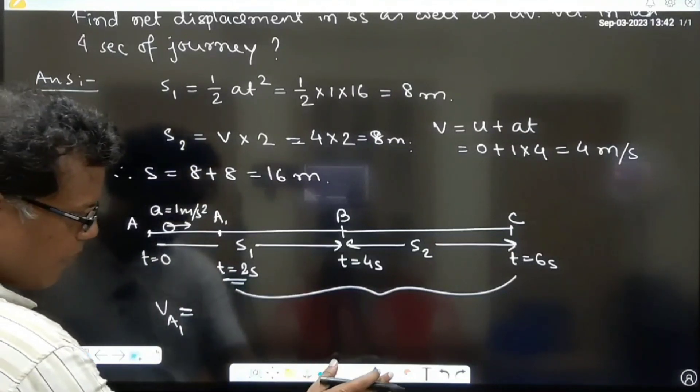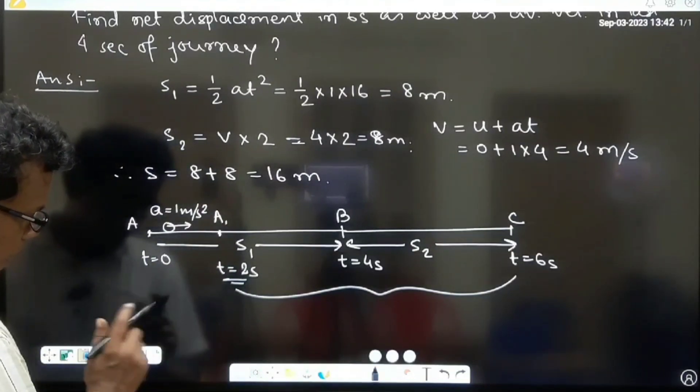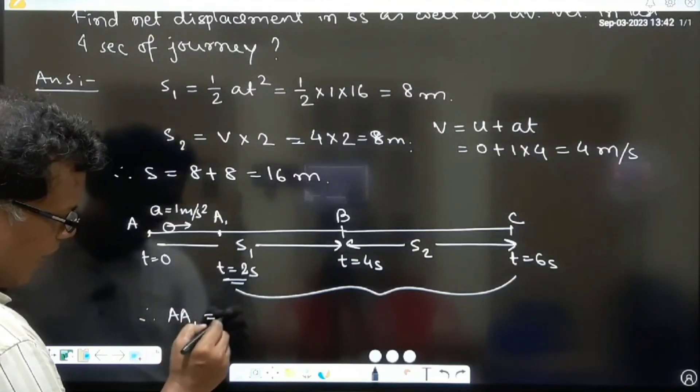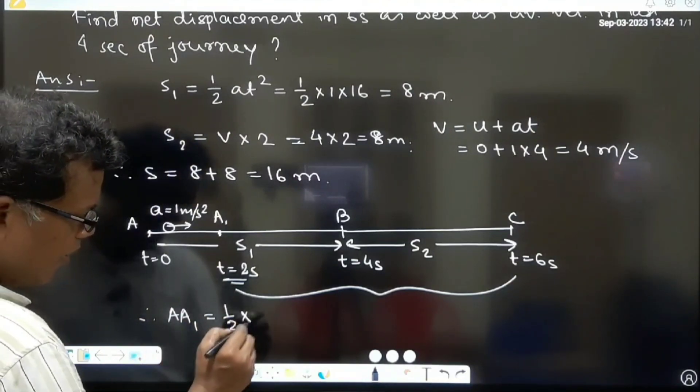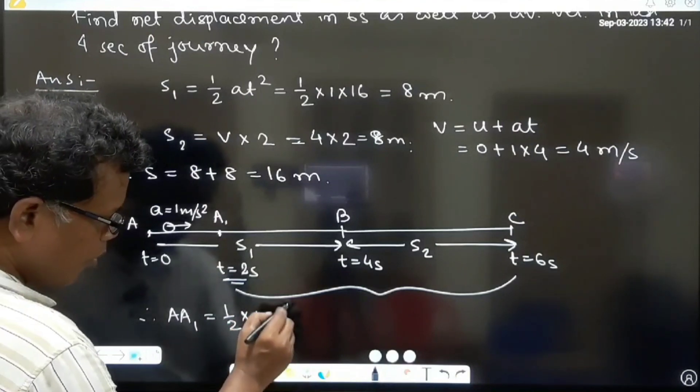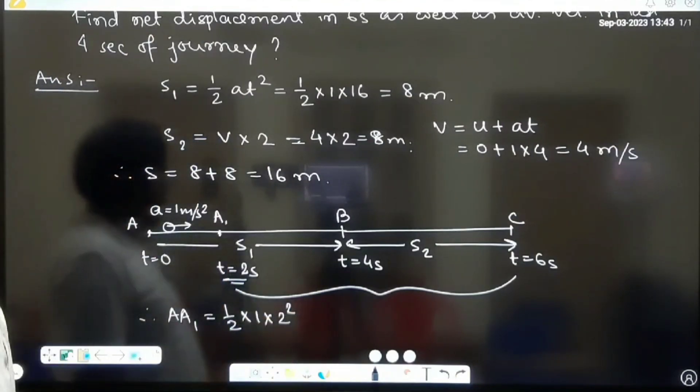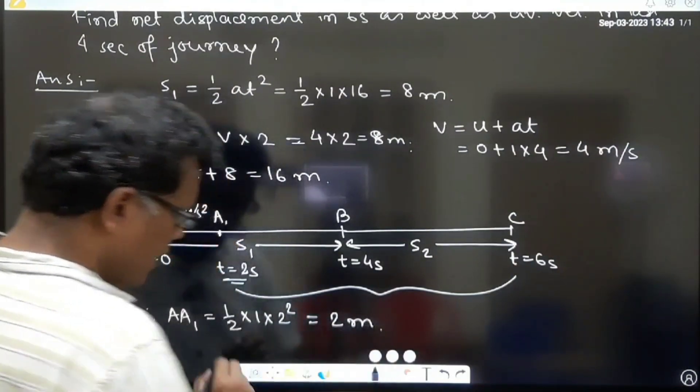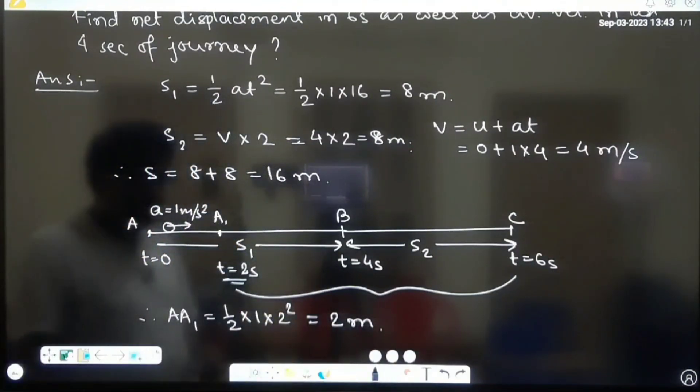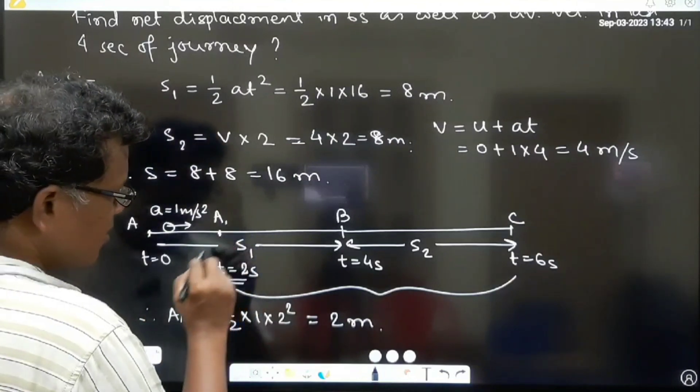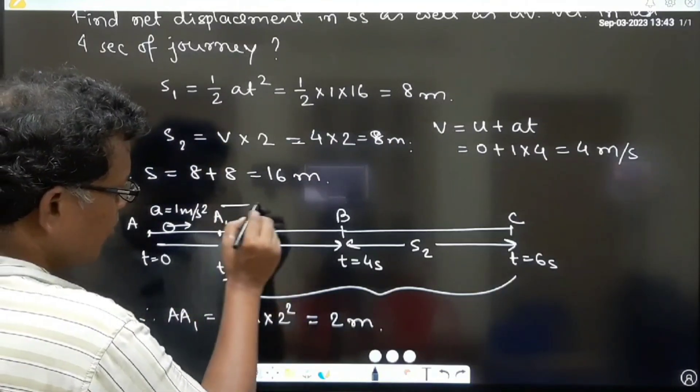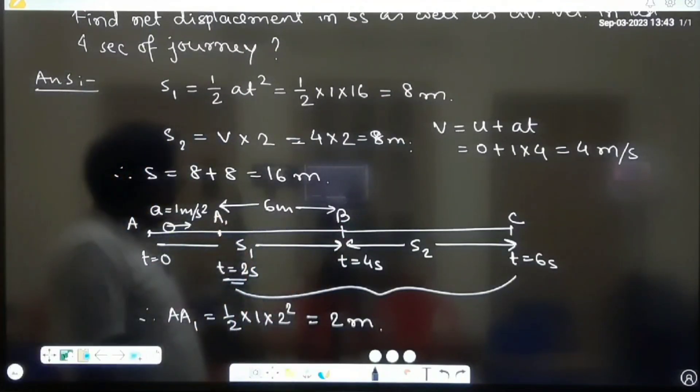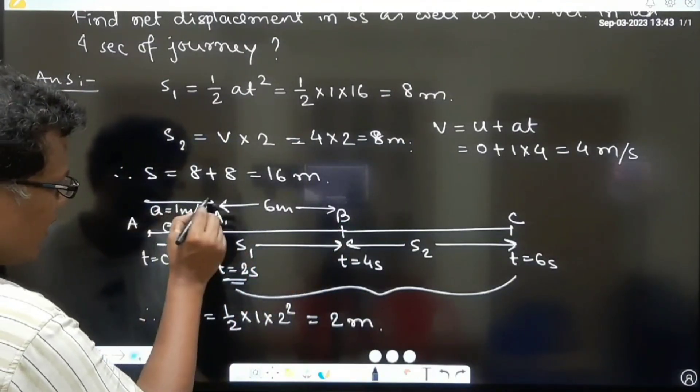So I can calculate that displacement. That can be written half into a into two square. First two second is just two meter. So the last two seconds of accelerated motion went six meter. First two seconds went two meter.